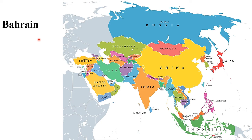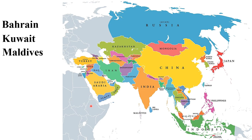In Asia, Bahrain is a country in the Arabian world and it has no permanent natural rivers. The second country is Kuwait, also found in the Arabian world, and it has no permanent rivers. The third country is Maldives, the smallest island country in Asia, and this island country has no permanent rivers.